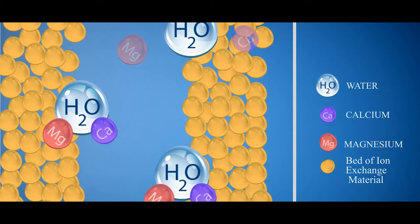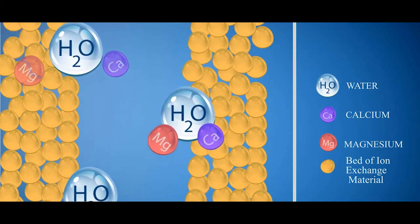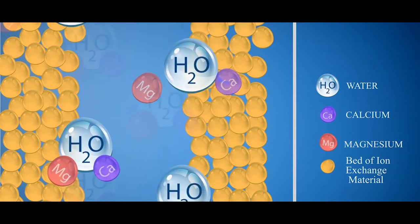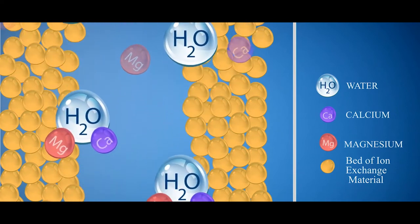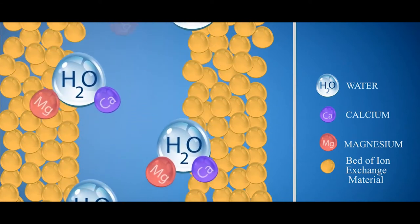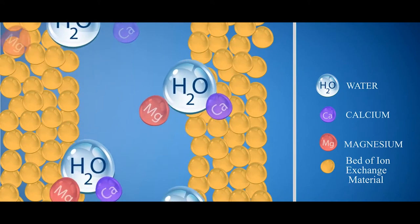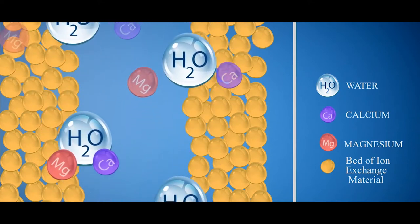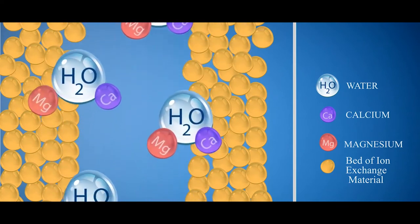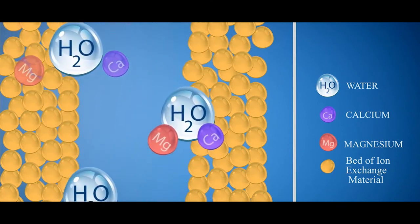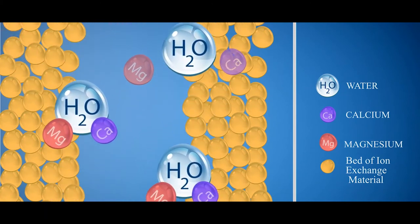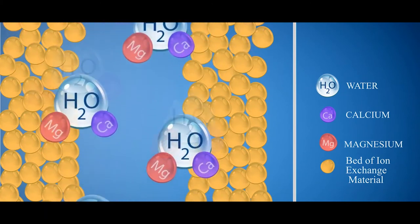LivePure Water Softener is based upon ion exchange process. When hard water passes through a bed of resin, ion exchange process starts. Resin beads extract calcium and magnesium ions from water and releases equal amount of NaCl. When resin beads are completely covered with calcium and magnesium ions and NaCl completely exhausted from resin beads due to the exchange process, it needs regeneration after proper backwash of system.